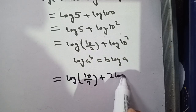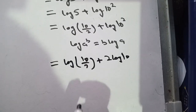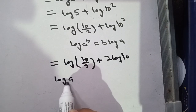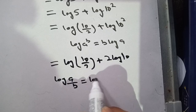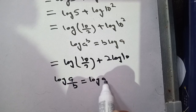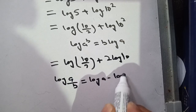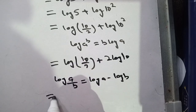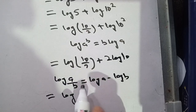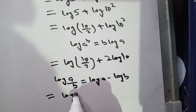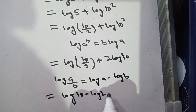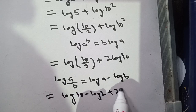We also know that log of a divided by b is equal to log of a minus log of b. Using this identity, log of 10 divided by 2 becomes log of 10 minus log of 2. So the expression becomes log of 10 minus log of 2 plus 2 times log of 10.